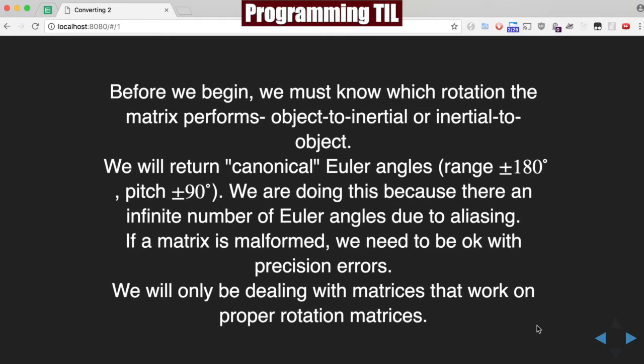First thing you need to know: if we're going object to inertial or inertial to object, just like we did last time, we're going to be returning canonical Euler angles, which have a range of plus or minus 180 degrees and pitch of plus or minus 90.